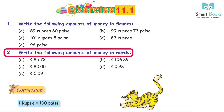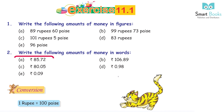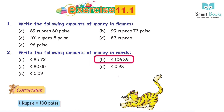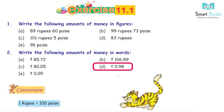Question 2: write the following amounts of money in words. a. Rs. 85.72 = 85 rupees 72 paise. b. Rs. 106.89 = 106 rupees 89 paise. c. Rs. 80.05 = 80 rupees 5 paise. d. Rs. 0.98 = 98 paise. e. Rs. 0.09 = 9 paise.